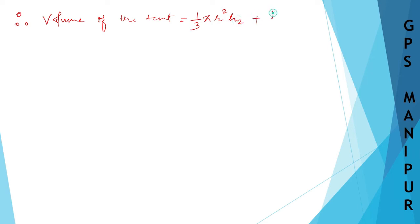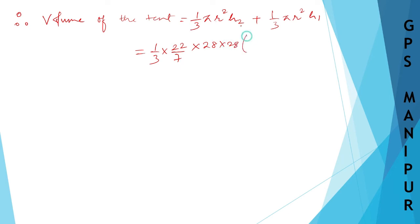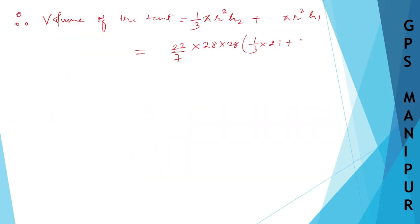Volume = (1/3)πr²H2 + πr²H1. Taking πr² common, we get πr²((1/3)H2 + H1). R = 28, H2 = 21, H1 = 15. So: (22/7) × 28 × 28 × ((1/3)×21 + 15) = (22/7) × 784 × (7 + 15).